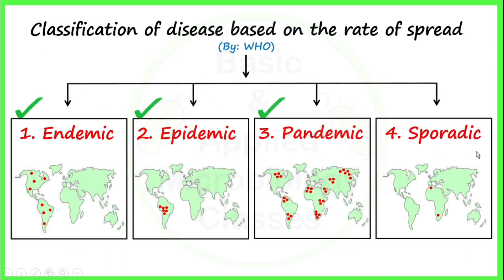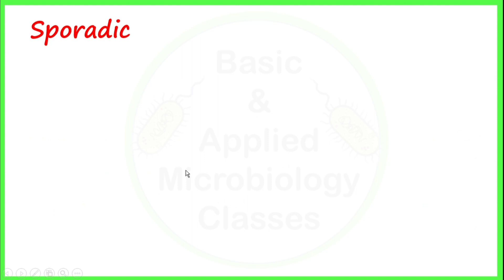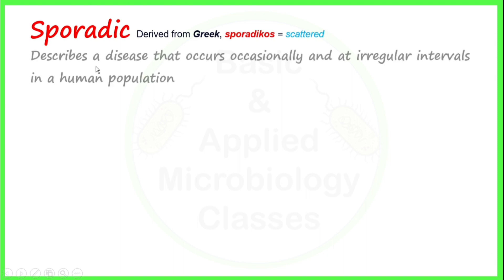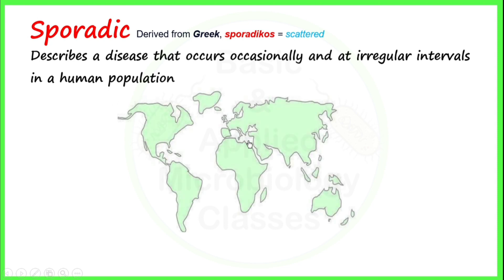Now we are going towards our fourth type, sporadic. The word sporadic is derived from Greek, taken from a word meaning 'scattered'. We use the term sporadic to describe a disease that occurs occasionally and at irregular intervals in a human population. As shown in this picture, sporadic diseases are very rare, and if two cases appear in a geographical area, they will be so scattered that they will not be related to each other with respect to time or space.